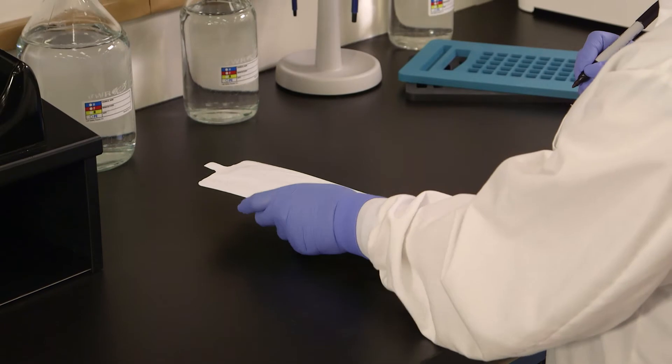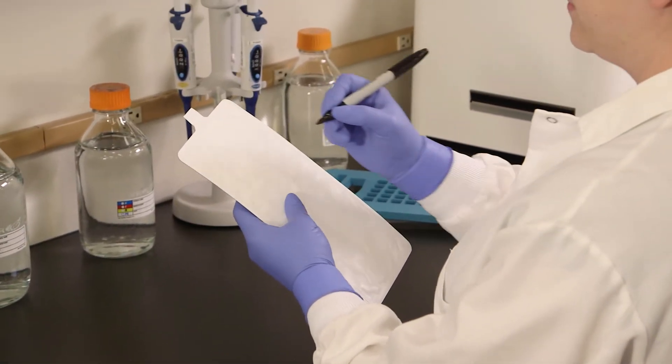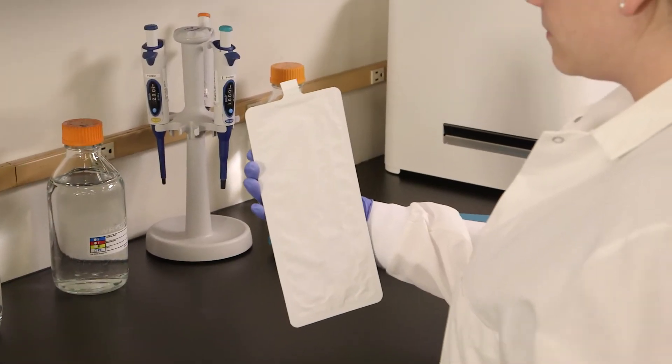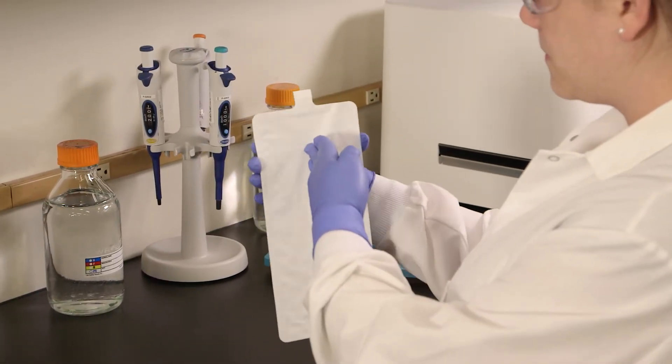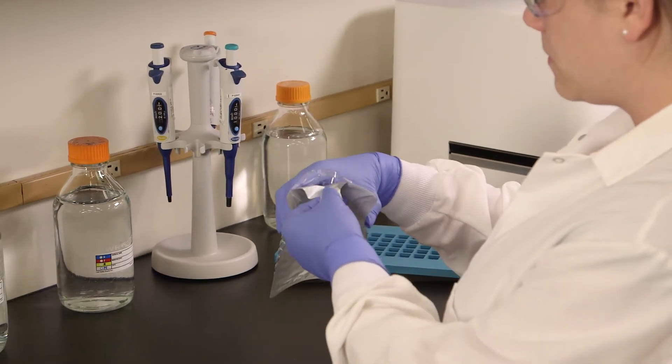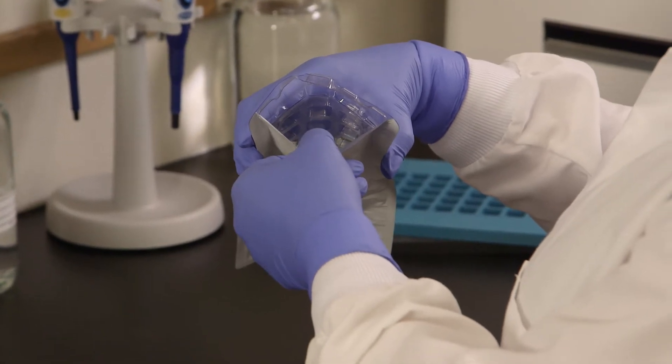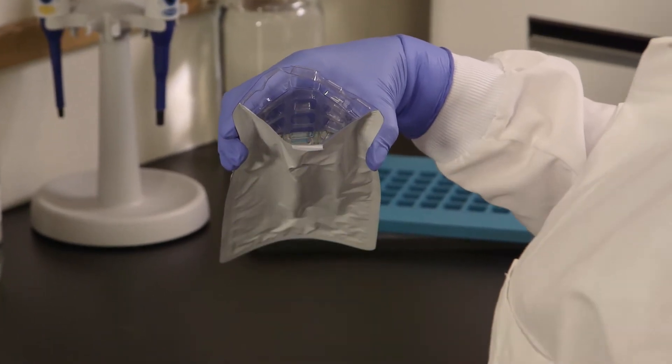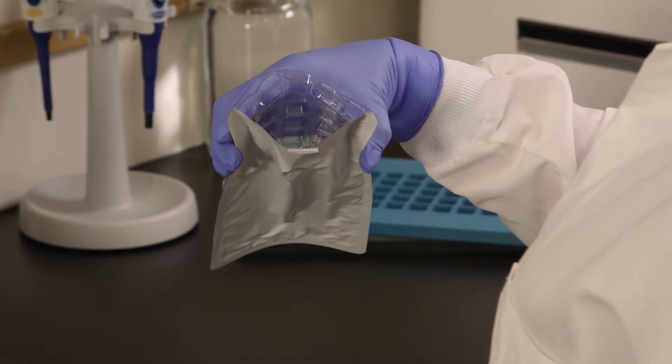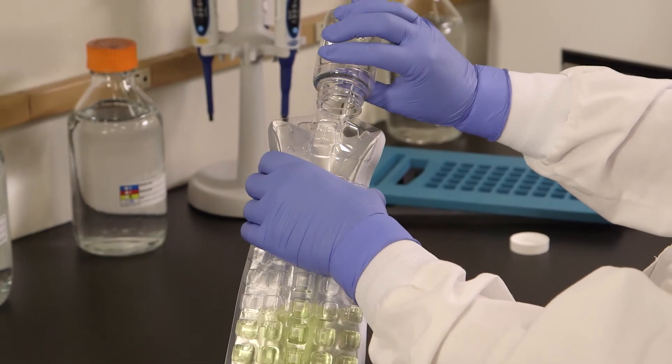Use only a permanent felt tip marker to label the Quantitray. Adhesive labels may adhere to the sealer roller and ballpoint pens may puncture the paper. Hold the Quantitray at the top with the well side facing your palm. Push the top edge of the Quantitray in with your free hand while squeezing the tray into a circle. Open the Quantitray by gently pulling the foil tab away from the plastic side. Be careful not to tear the tab. Do not touch the inside of the tray. Pour the sample mixture into the Quantitray, avoiding contact with the foil tab.